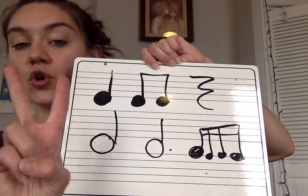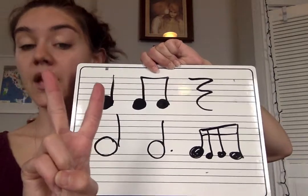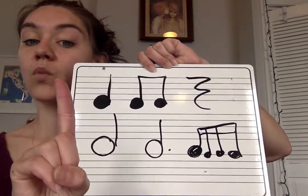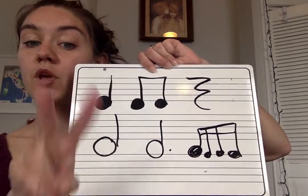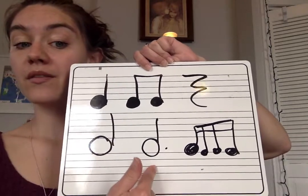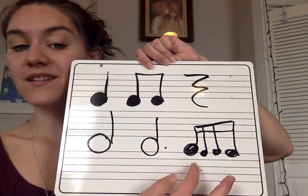A dotted half note — the dot is worth half of the note's value. If the note is worth two, half of two is one. Two plus one — three. This is worth three beats.